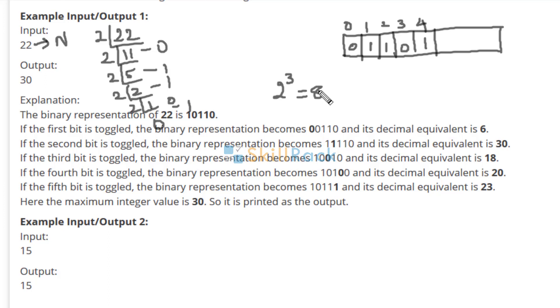2 power 3 is 8. So when you are toggling this 0 to 1, it means you are going to add 8 to n. What is the value of n? It is 22. So 22 plus 8 is 30. So we can print 30 as the output.